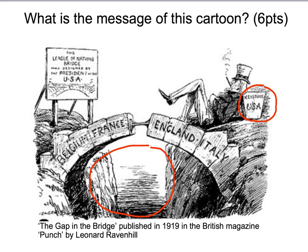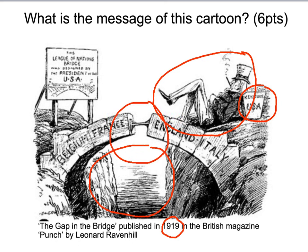Looking at the body language of Uncle Sam, we can see he's potentially asleep or dozing, giving the message that America does not seem to care about what will happen without the keystone in place. At the time of publication — December 1919 — this was three months before the American Senate voted not to join. So this is actually a criticism of the Americans for delaying their joining, or a warning of what will happen if America does not join. The overall message is that the League of Nations, represented by the bridge, will be weak and consequently will not be successful in stopping another world war.